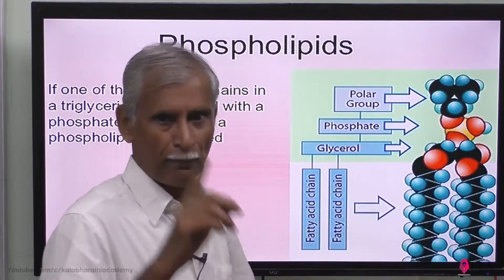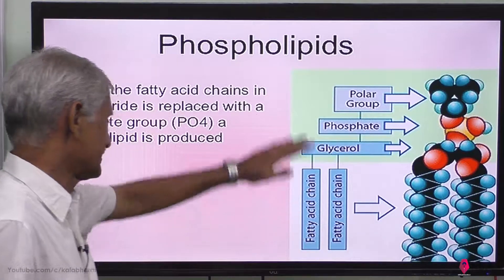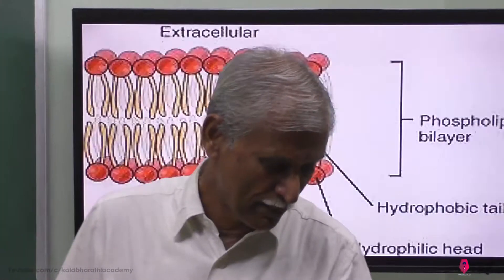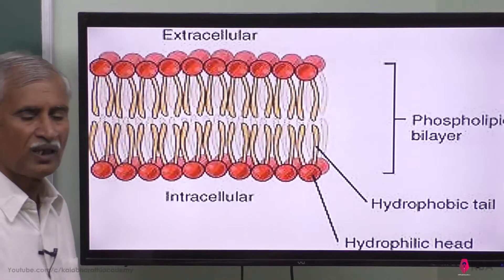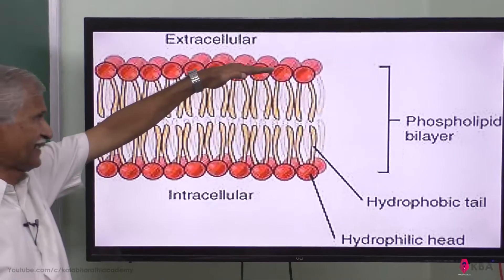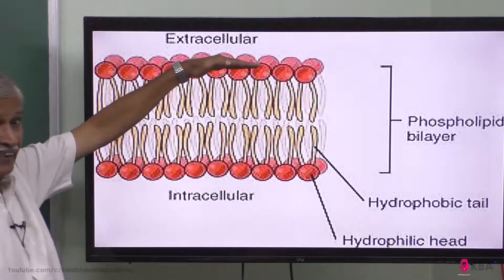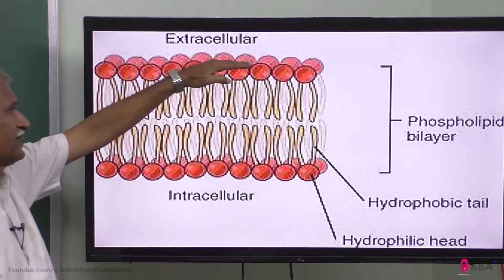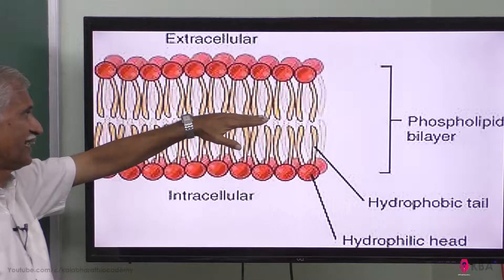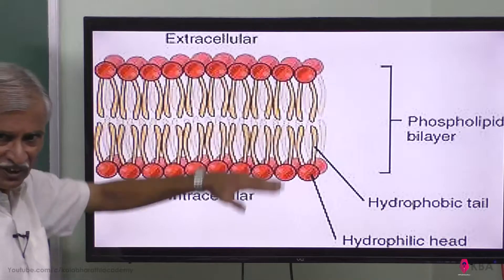So this is bipolar — this is the structure of the phospholipid, it is part of the cell membrane. There is a head end and a tail end. The head end has a different charge and the tail end has a different charge.